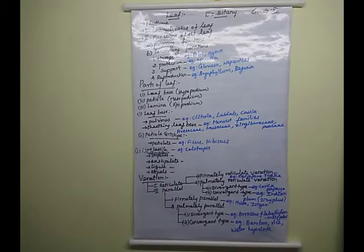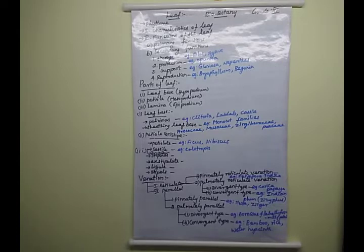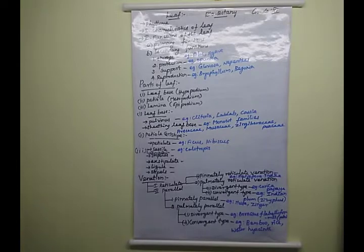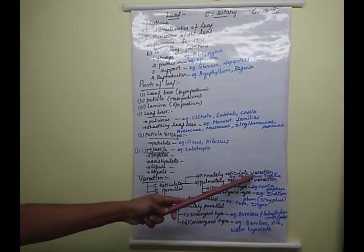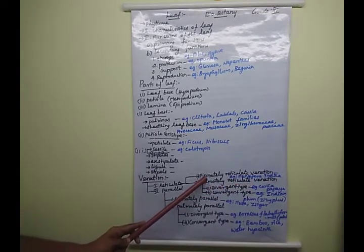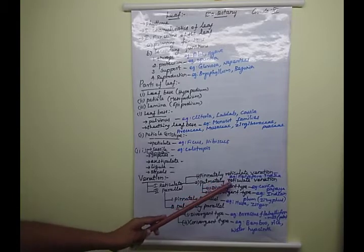Reticulate venation has two sub-types: pinnately reticulate venation and palmately reticulate venation. In pinnately reticulate venation, there is only one midrib at the center, from which many lateral veins arise and together form a network. Example species: Ficus and mango.